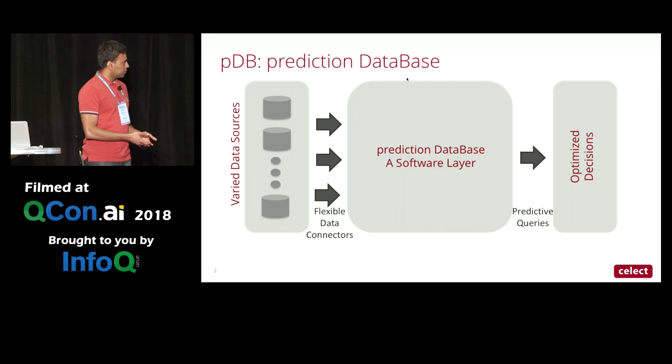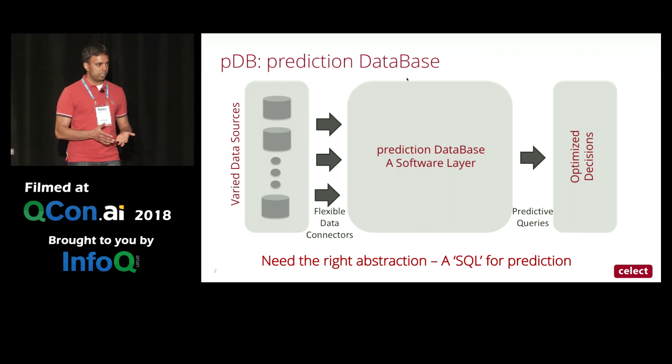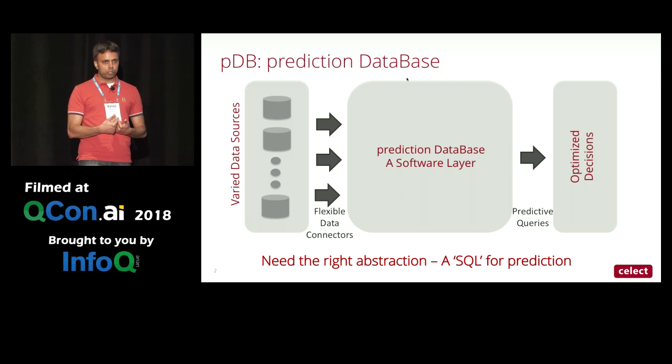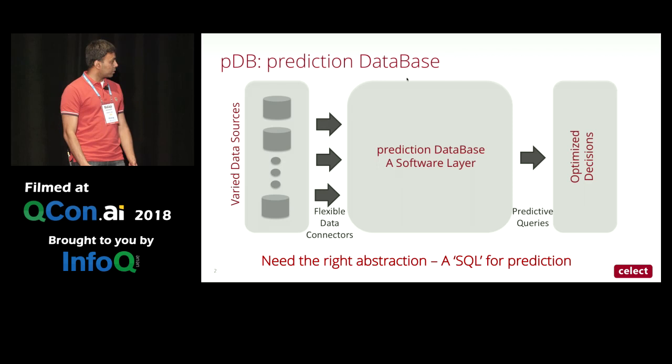Before we could build something like this, we found we needed the right abstraction — a flexible abstraction to talk about prediction problems. The analogy here is with SQL and what it did for databases. SQL decoupled the description of the data we want to fetch from where the data is stored and the instructions for actually accessing it, allowing us to focus on the logic and outsource the mechanics to the database.